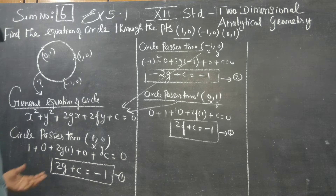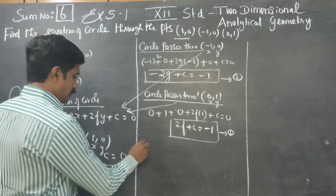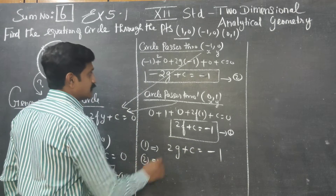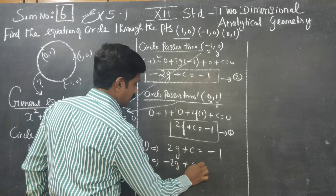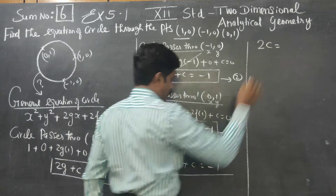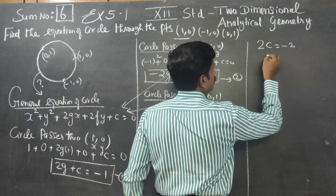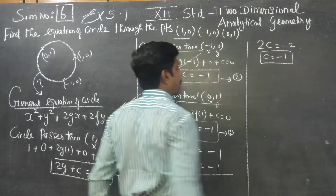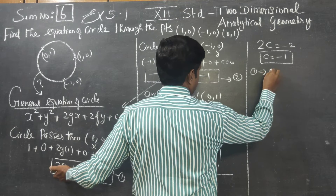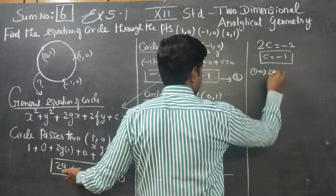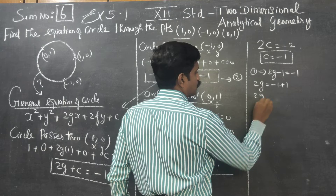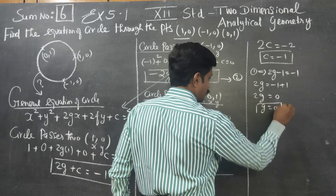After finding equations 1, 2, and 3, we solve for g, f, and c. Adding equation 1 (2g + c = -1) and equation 2 (-2g + c = -1), the g terms cancel, giving 2c = -2, therefore c = -1. Substituting c = -1 into equation 1: 2g + (-1) = -1, so 2g = 0 and g = 0.